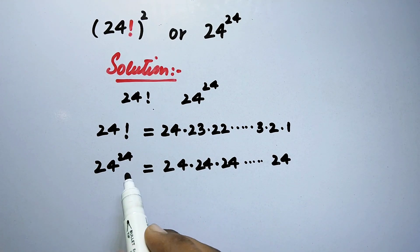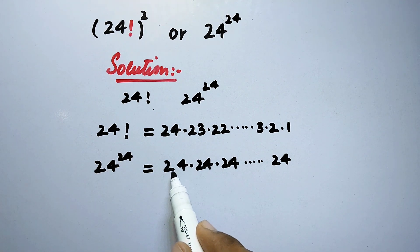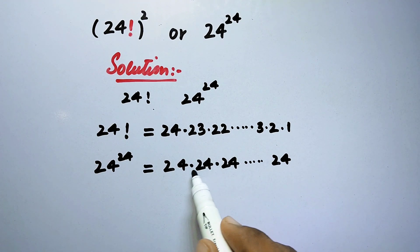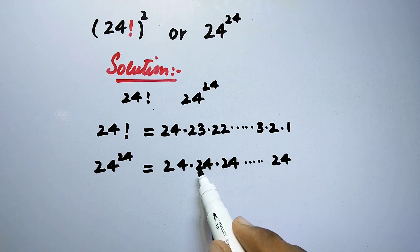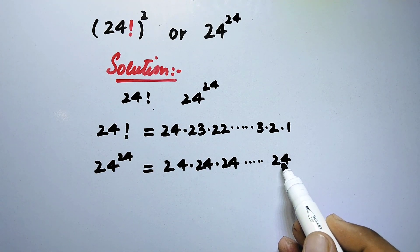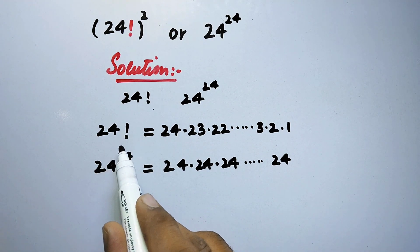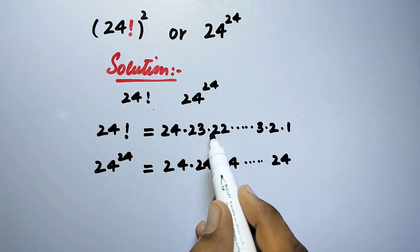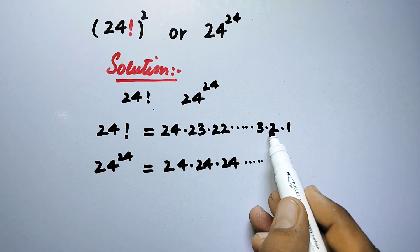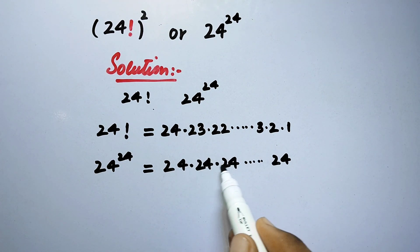In the case of 24 to the power 24, the numbers being multiplied are all the same — always 24. But in the case of 24 factorial, the numbers being multiplied get smaller and smaller, down to 1. So its product will be smaller than 24 to the power 24.